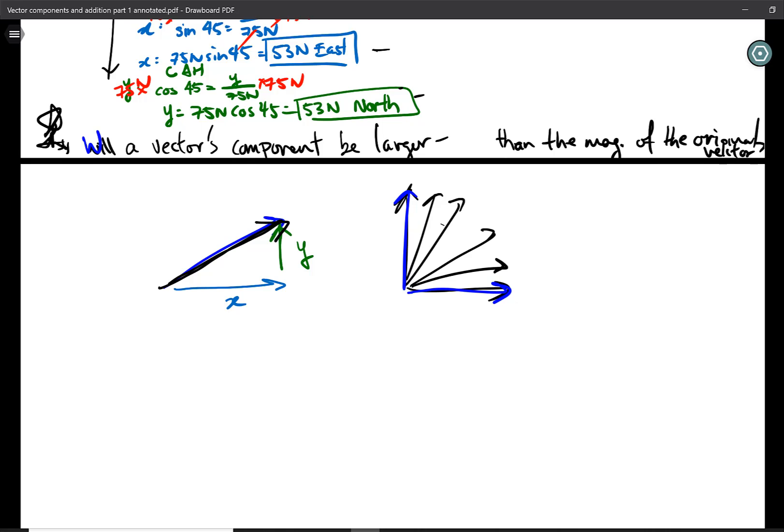And in those cases, notice it will not have an x component for a vertical, for this vertical one. Or it's not going to have a y component if it's directly flat. So that means the component of that vector would be the vector magnitude itself.